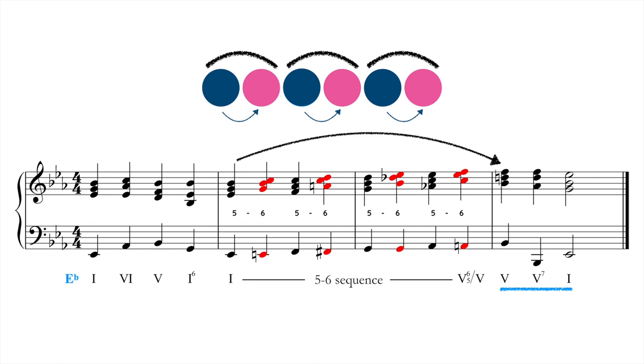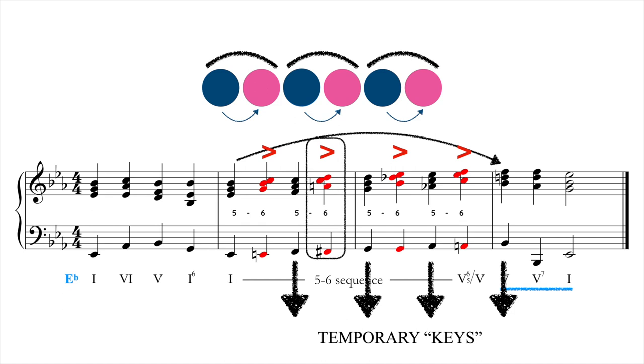Performers need to be sensitive to the degree of accent created by secondary dominants in a given context, so as to give it the right amount of emphasis. One last word about secondary dominants in chord spelling. Always spell the chord as though you were in the temporary key. For example, at the end of the second bar in the example above, the correct bass note is F-sharp and not G-flat, because we are momentarily touching on G minor.